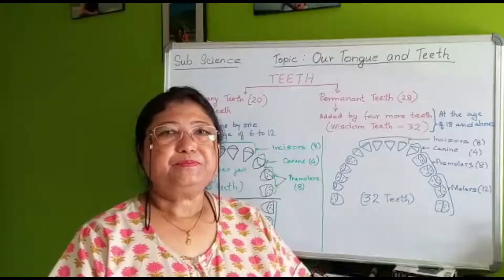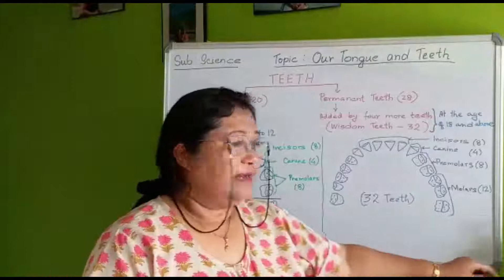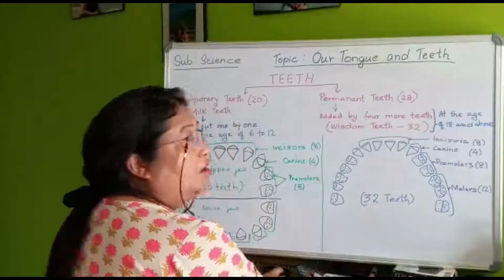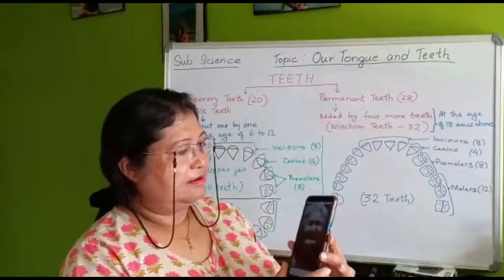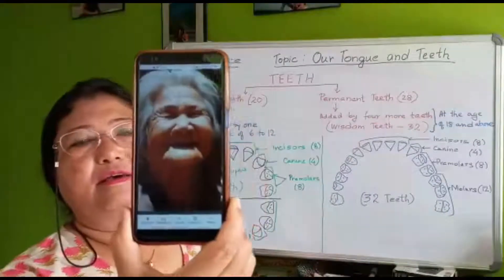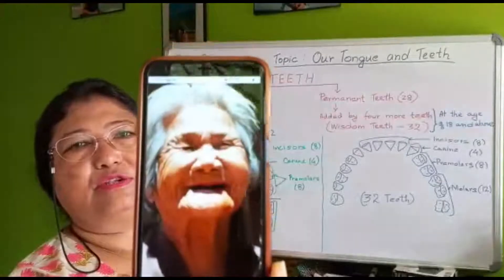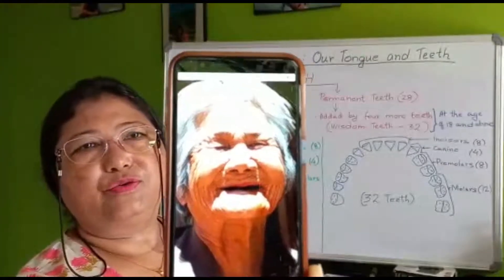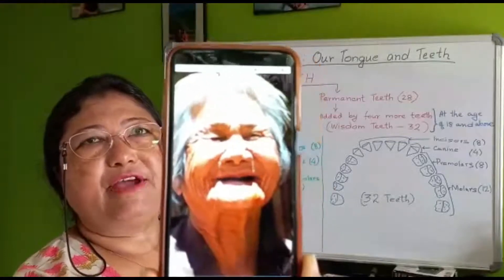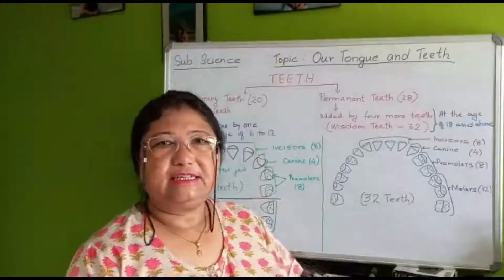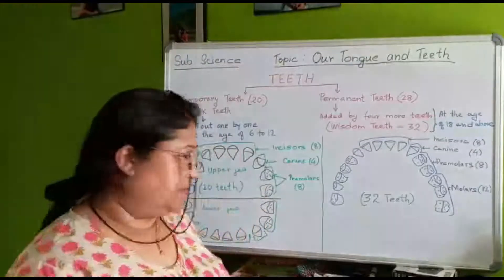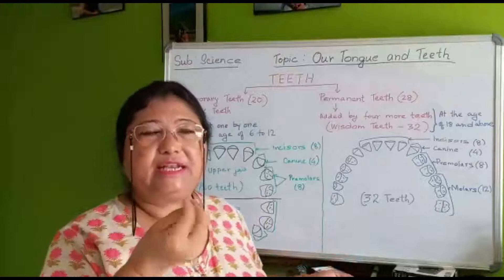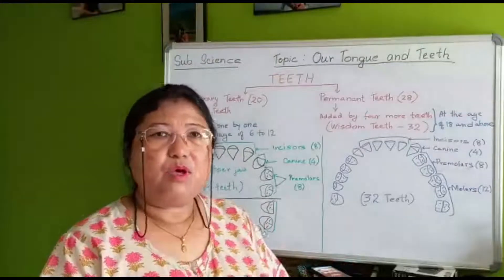When a person is without teeth, look at the picture here — see the shape of the face. The mouth goes inside. They find it very difficult to eat, very difficult to speak, and their speaking is not clear. While eating food they also have some problems.